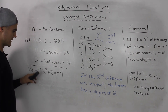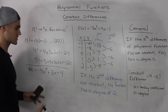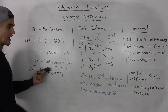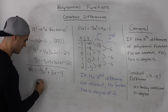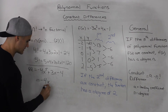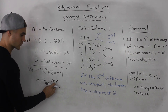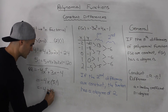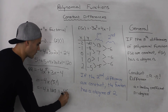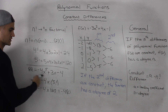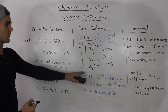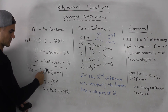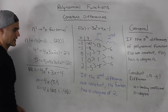For example, given the function -4x⁵ + 3x - 4, what is the constant difference? The leading coefficient a is -4 and the degree n is 5, so the constant difference equals -4 times 5!, and we already know 5! = 120. So it's -4 × 120 = -480. If you made a table of values for this function and took the differences, the fifth differences would be constant at negative 480.